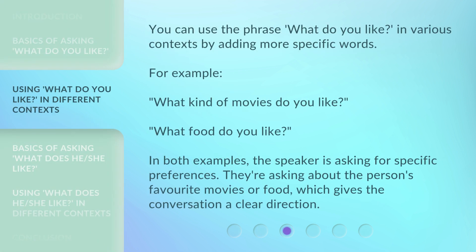You can use the phrase 'What do you like?' in various contexts by adding more specific words. For example: 'What kind of movies do you like?' or 'What food do you like?' In both examples, the speaker is asking for specific preferences — about the person's favorite movies or food — which gives the conversation a clear direction.